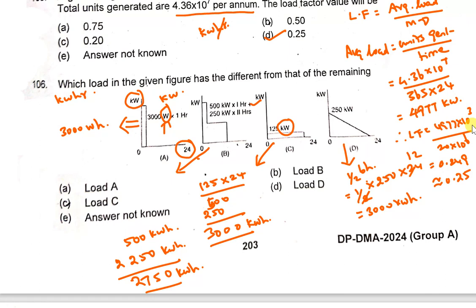Note: the unit shown is kilowatt-hours — that appears to be a printing mistake in the question. Among the four graphs, three loads have energy of 3000 kilowatt-hours, except option B (load B), which is different at 2700 kilowatt-hours.